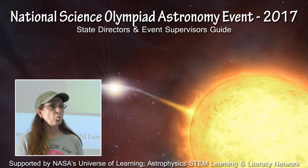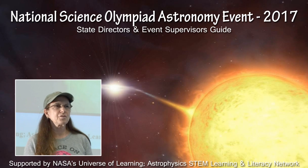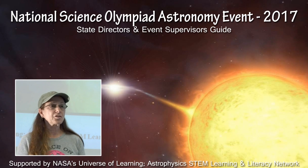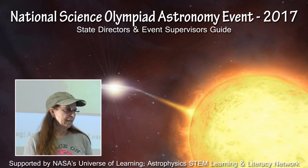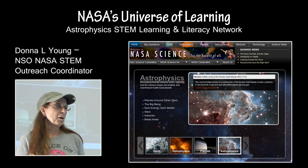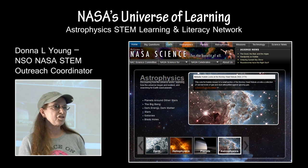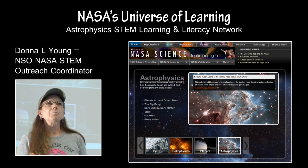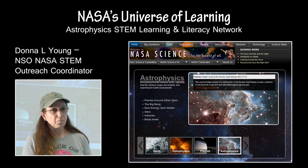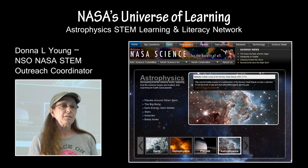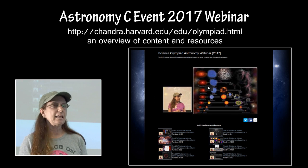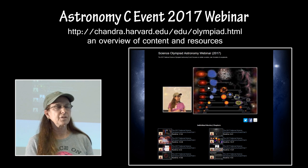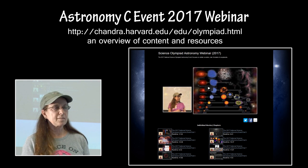This presentation is directed towards state directors and event supervisors involved with the 2017 National Science Olympiad Astronomy event. It is supported by the NASA Universe of Learning Partnership, involved with STEM education and outreach literacy in astrophysics. The NASA Astrophysics Division now has a more formal partnership with the National Science Olympiad and, along with the Chandra X-Ray Observatory, provides resources and materials to support the space science events.